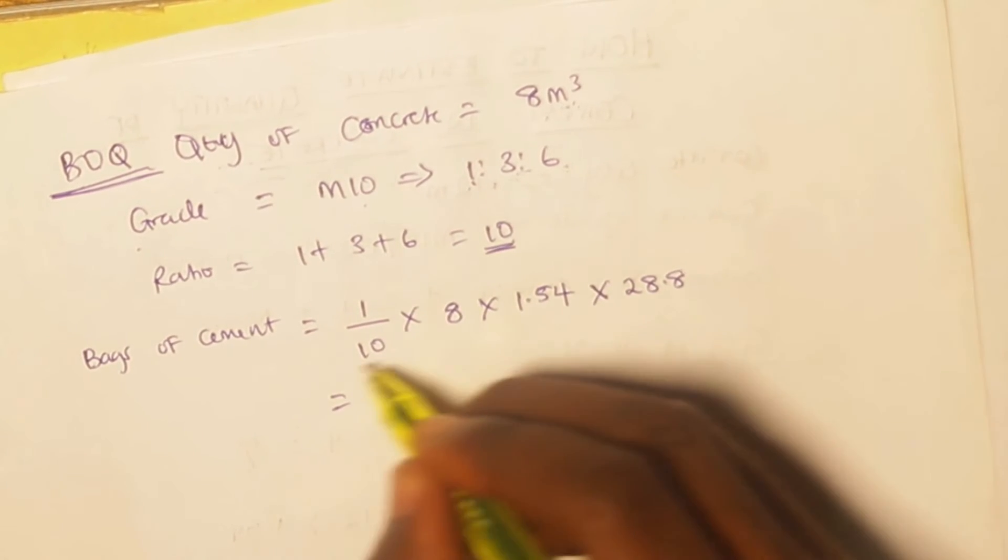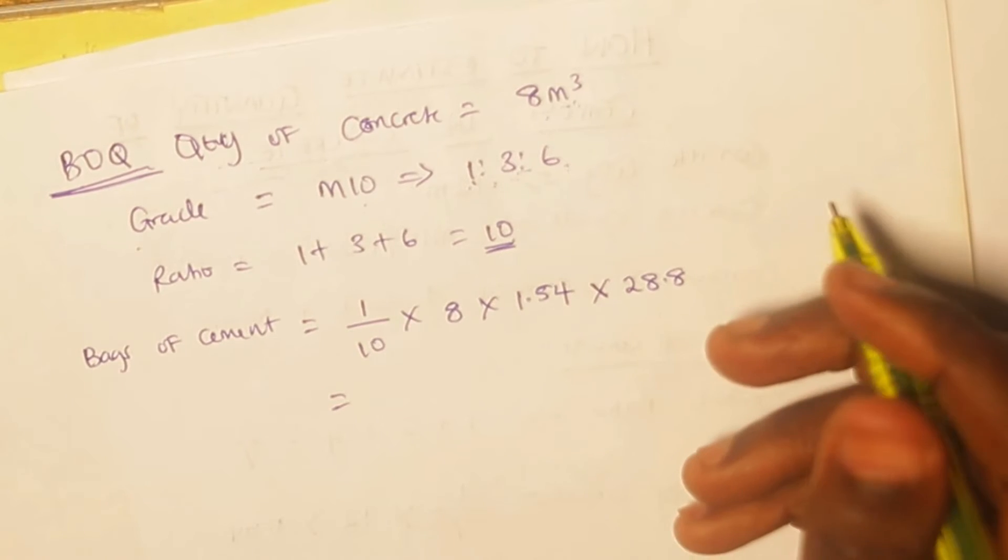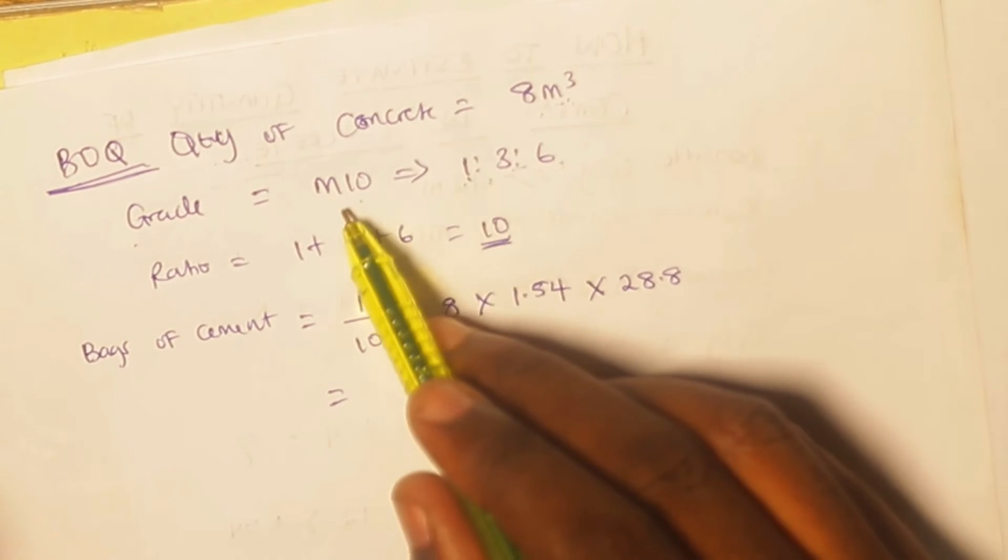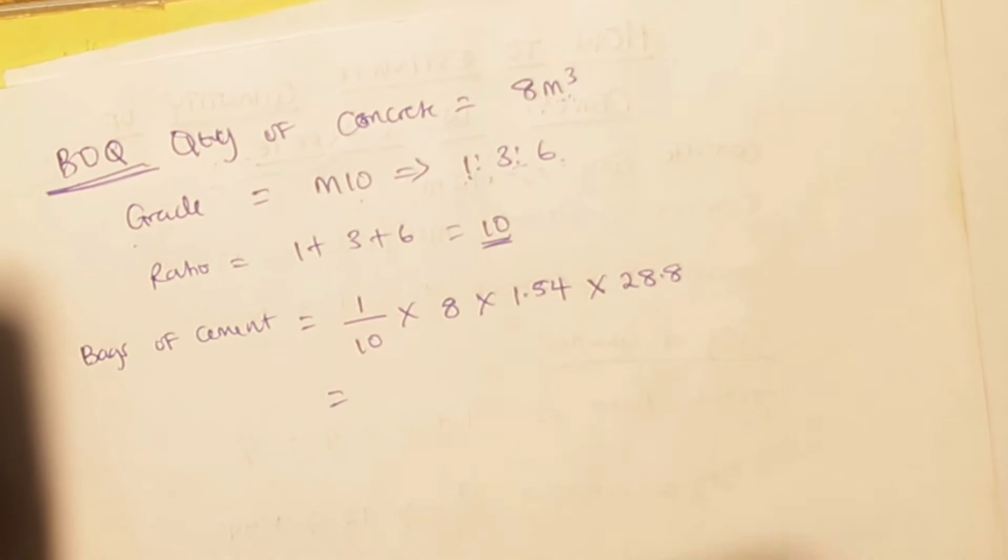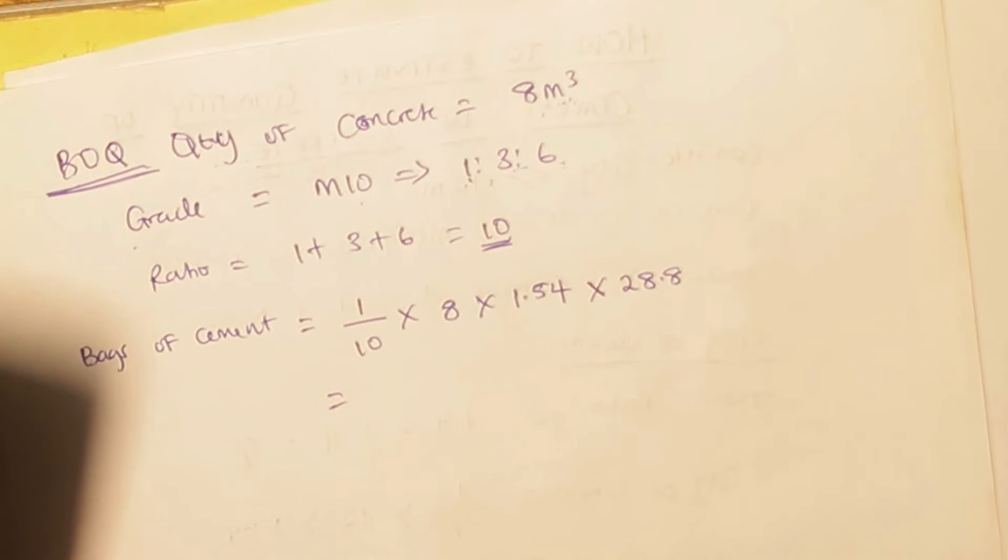So when I do this calculation directly, any answer I have is going to be automatically the total bags of cement that will be used for eight meters cube of grade M10 concrete. You can see that the calculation does not take more time. I'm just going to press my calculator: 1 divided by 10, multiplied by 8, multiplied by our constant 1.54.